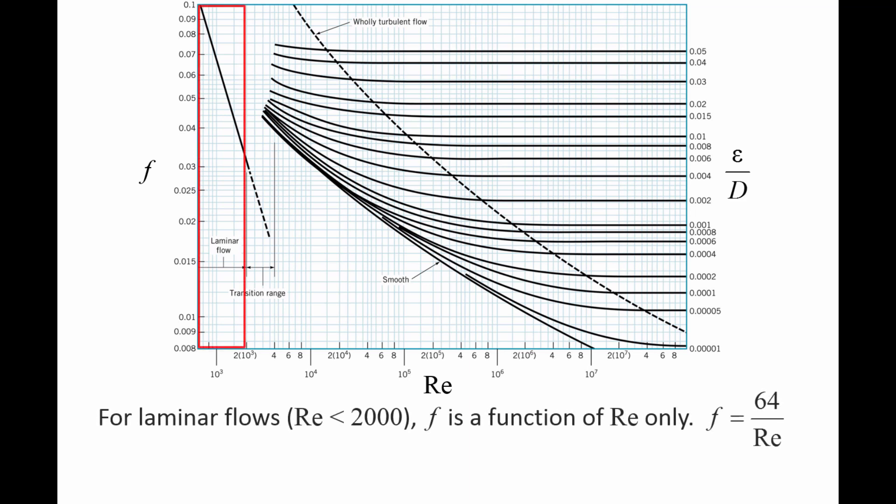If the Reynolds number of a flow is below approximately 2,000, the friction factor is only a function of the Reynolds number and can be calculated directly from the formula 64 over the Reynolds number. This formula is represented graphically by a line on the left side of the Moody chart.